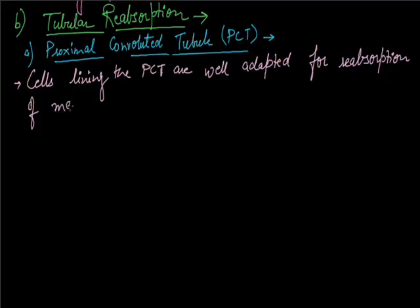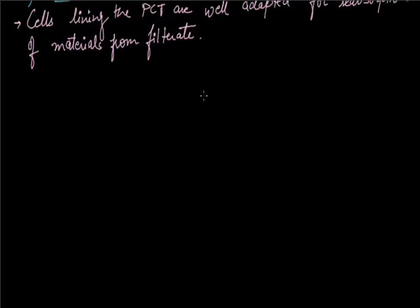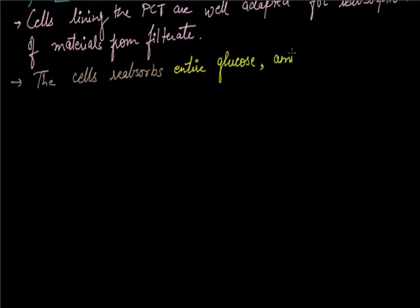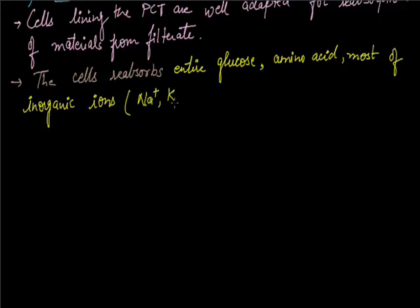In tubular reabsorption, substances which are important to the body get reabsorbed. The cells reabsorb entire glucose, amino acids, most inorganic ions like sodium, potassium, and chloride, much of the water, and some urea from the filtrate.